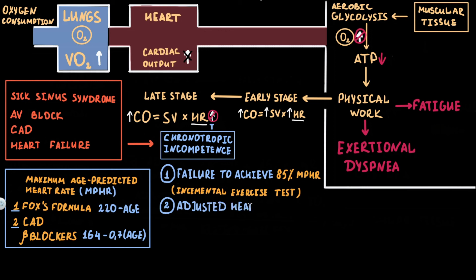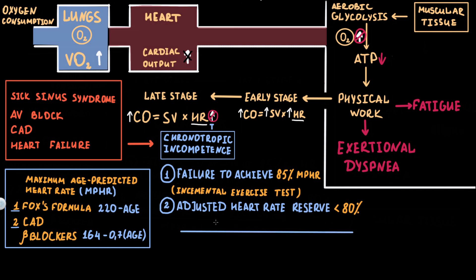Chronotropic incompetence can also be determined from the change in heart rate from rest to peak during an exercise test, commonly referred to as the heart rate reserve. Because heart rate reserve is affected by resting heart rate, we use the adjusted heart rate reserve. The diagnostic criterion is failure to achieve 80% of adjusted heart rate reserve, calculated as: change in heart rate from rest to peak divided by the difference between maximal age-predicted heart rate and resting heart rate, multiplied by 100.